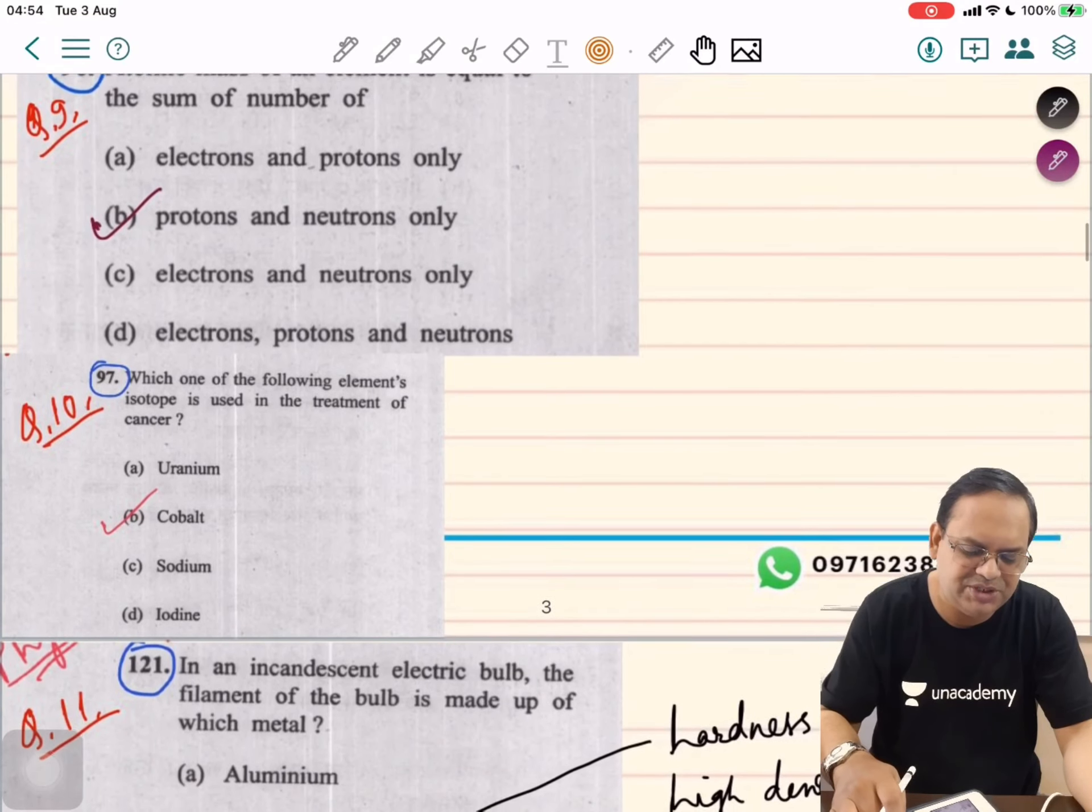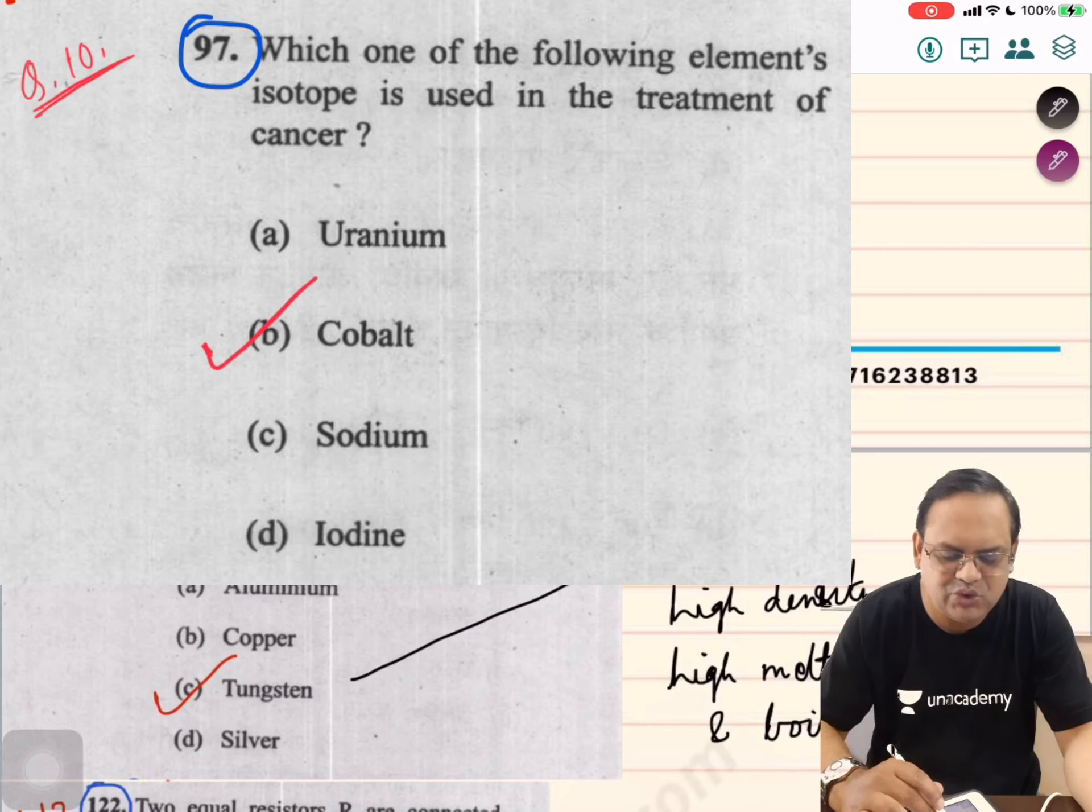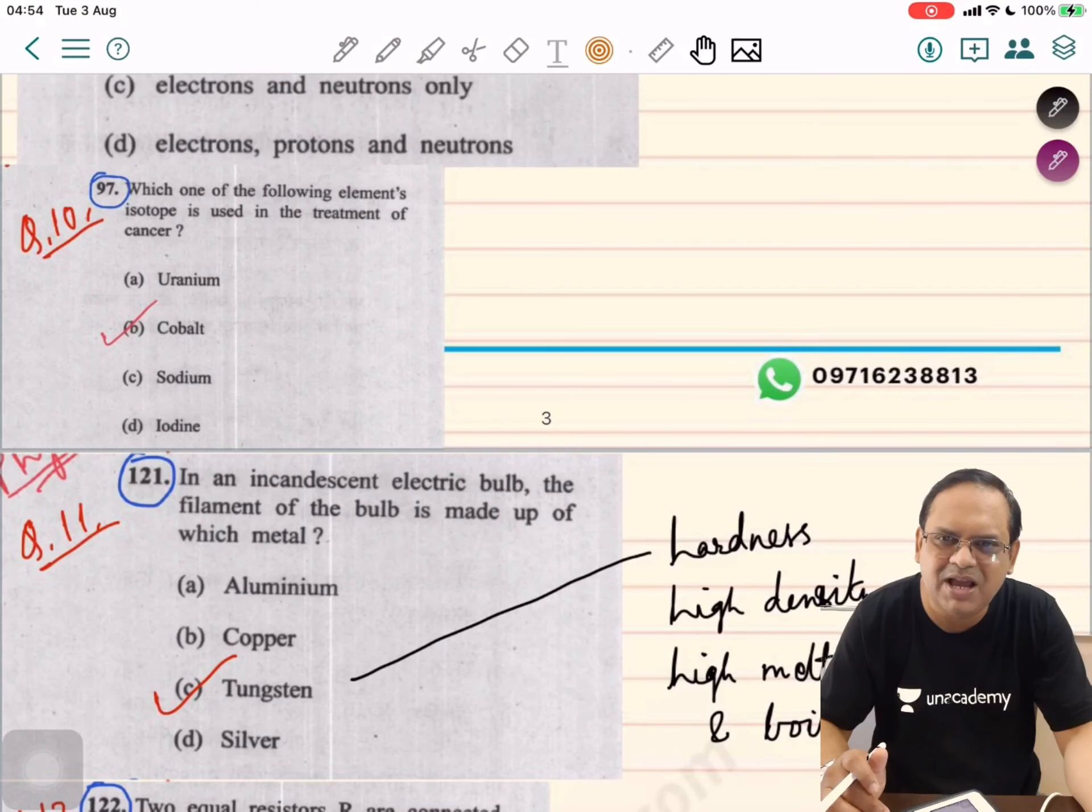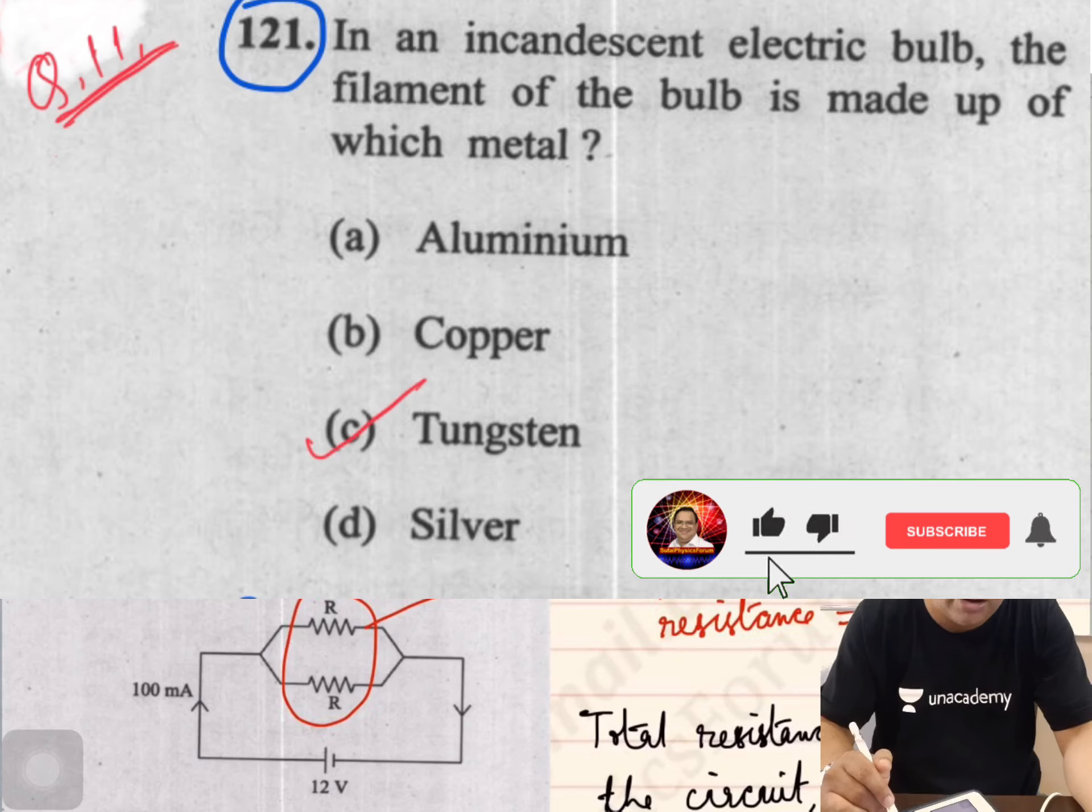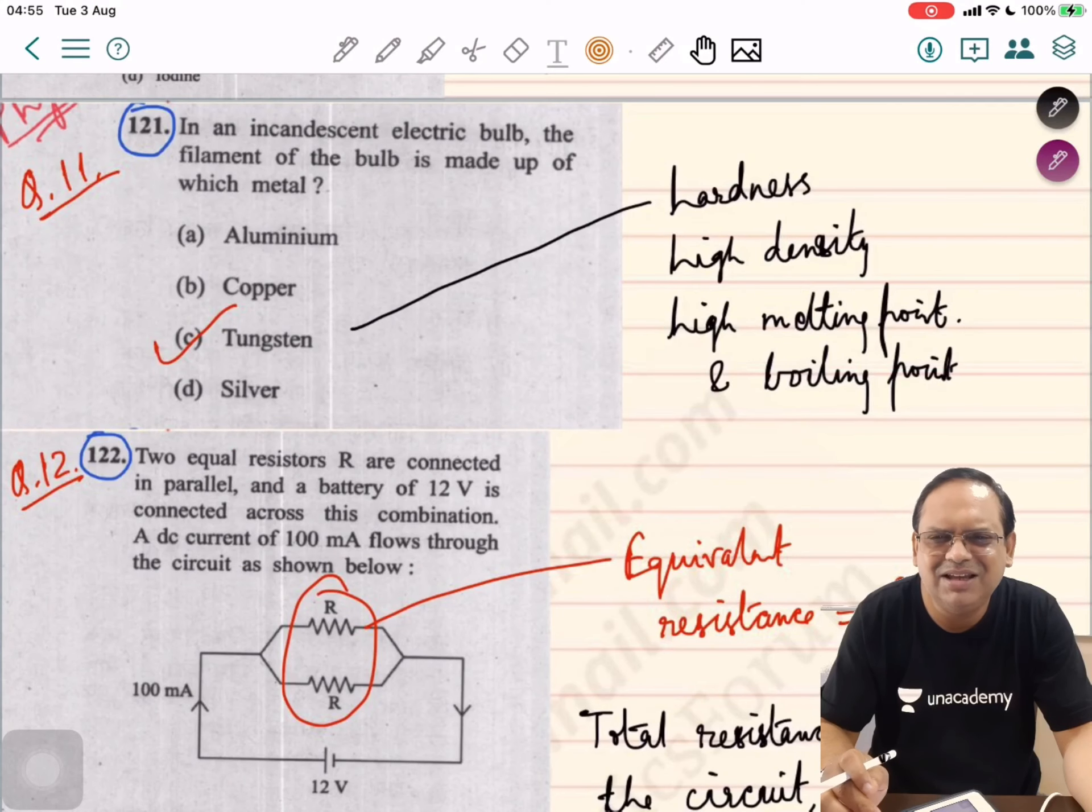Question number 10, which one of the following element's isotope is used in the treatment of cancer? This is basically radioactivity. The right option is cobalt. Uranium is of course radioactive but not used for cancer. In an incandescent electric bulb, the filament is made up of tungsten metal because of its hardness, high density, high melting point and boiling point.